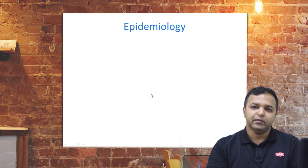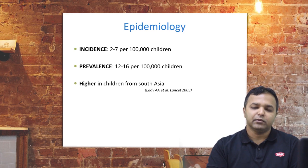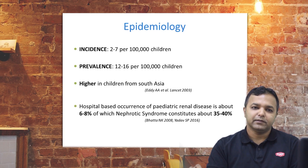Starting with epidemiology, it is a common disease with an incidence of around 2 to 7 per 100,000 children and a prevalence of about 12 to 16 per 100,000. It is higher in children from Southeast Asia. As per a study conducted at B.P. Gaudela Institute of Health Sciences, about 6 to 8 percent of annual admissions are due to pediatric renal conditions, of which a large proportion — about 35 to 40 percent — is nephrotic syndrome.